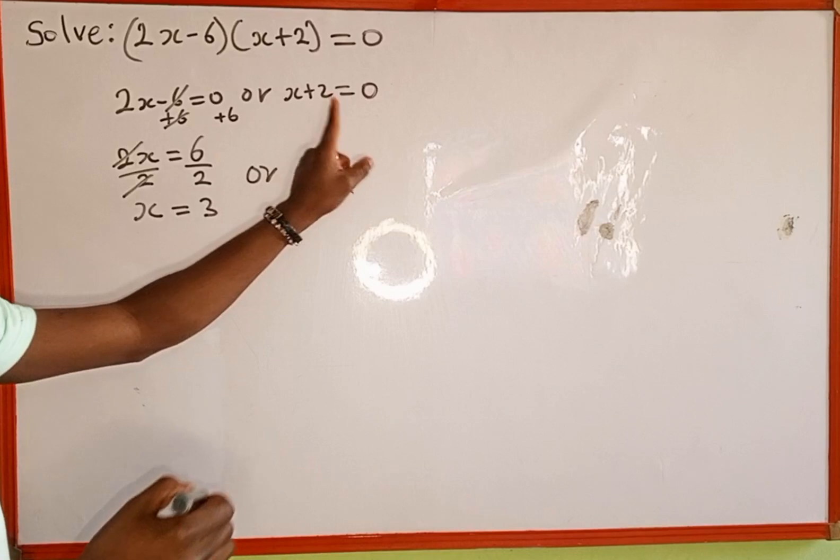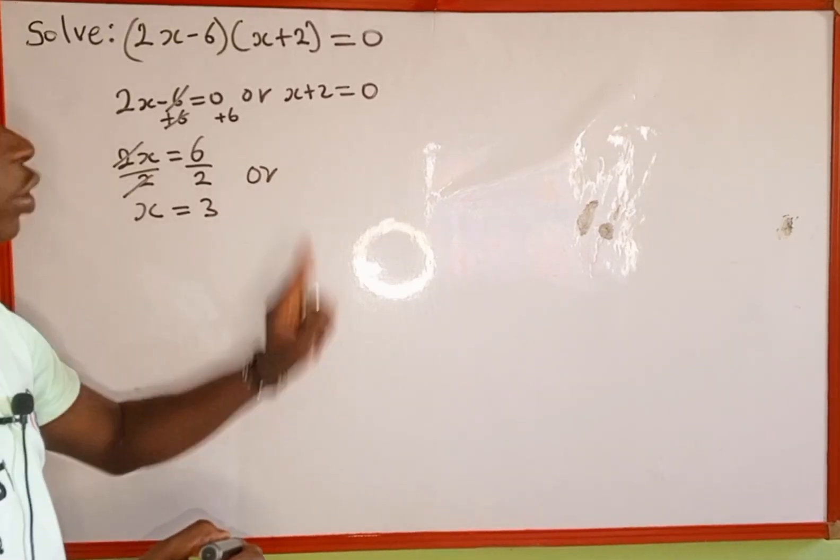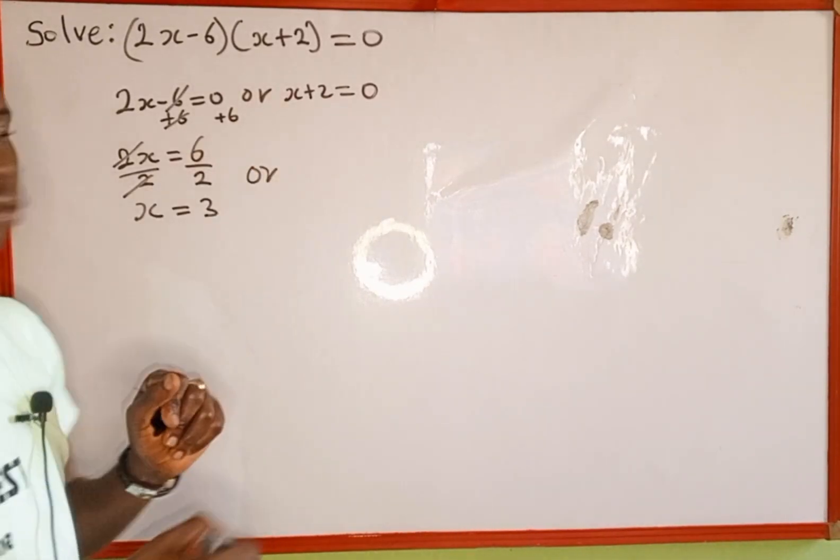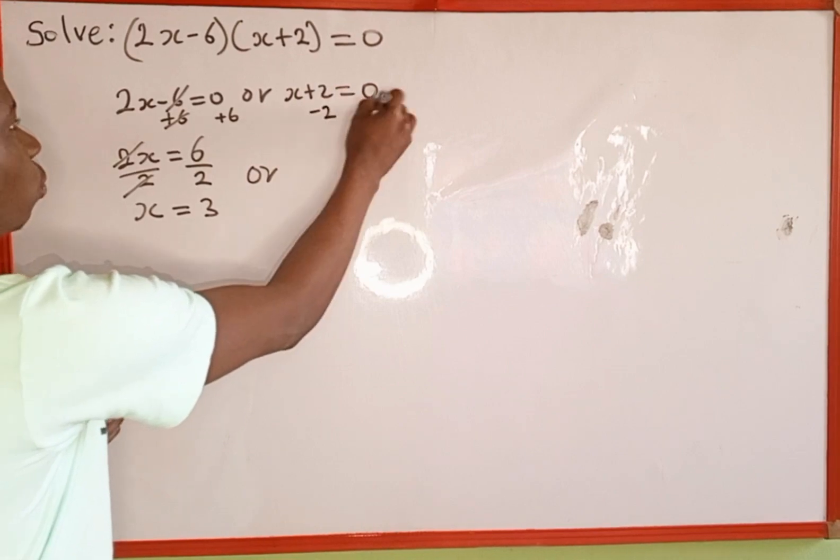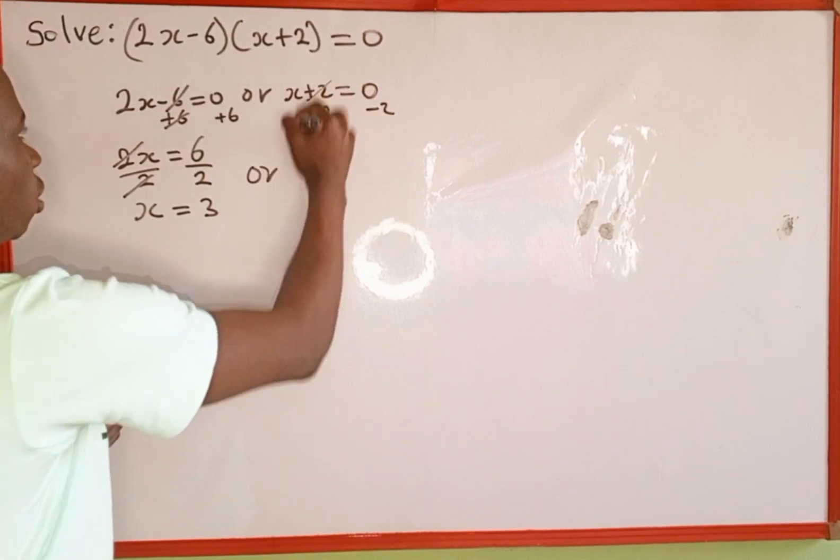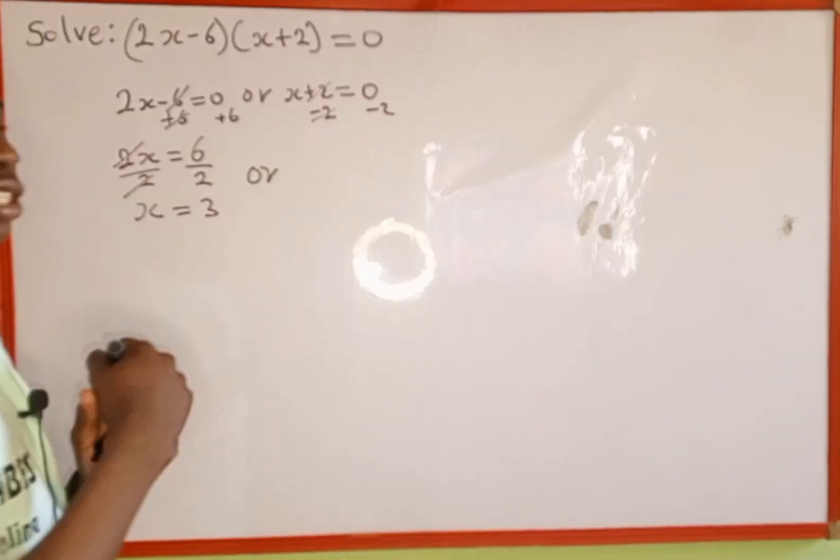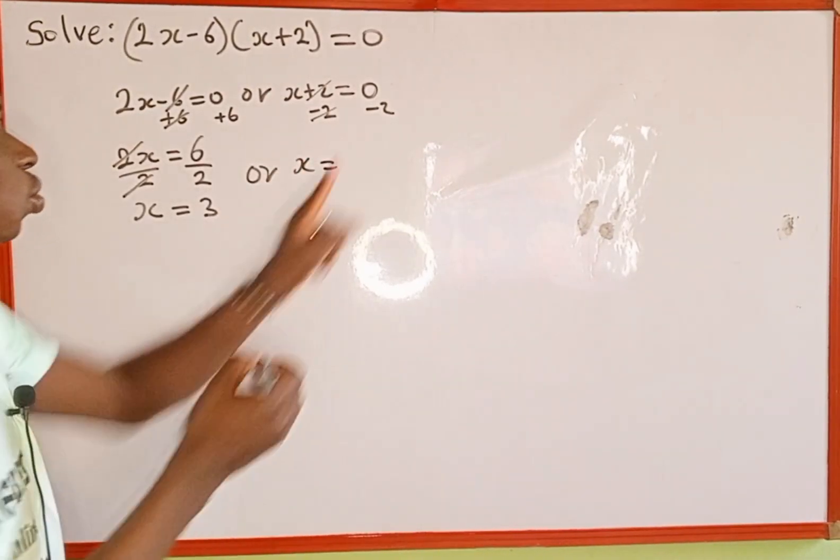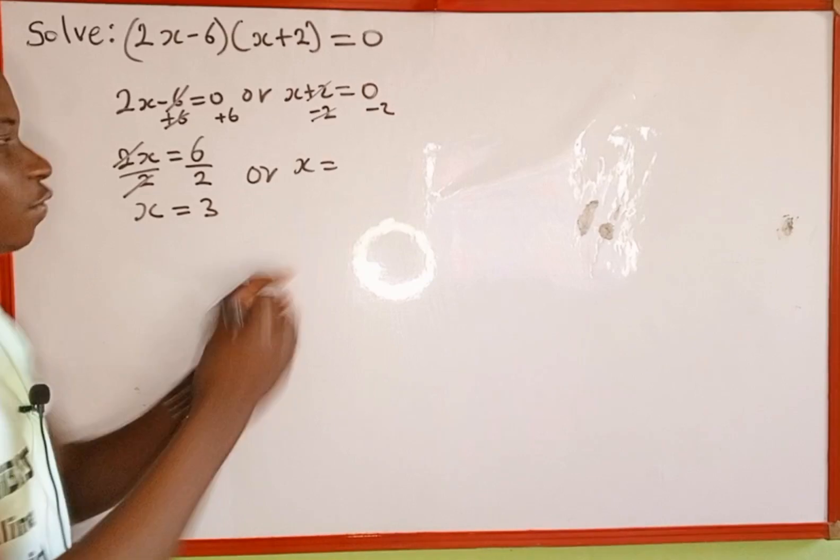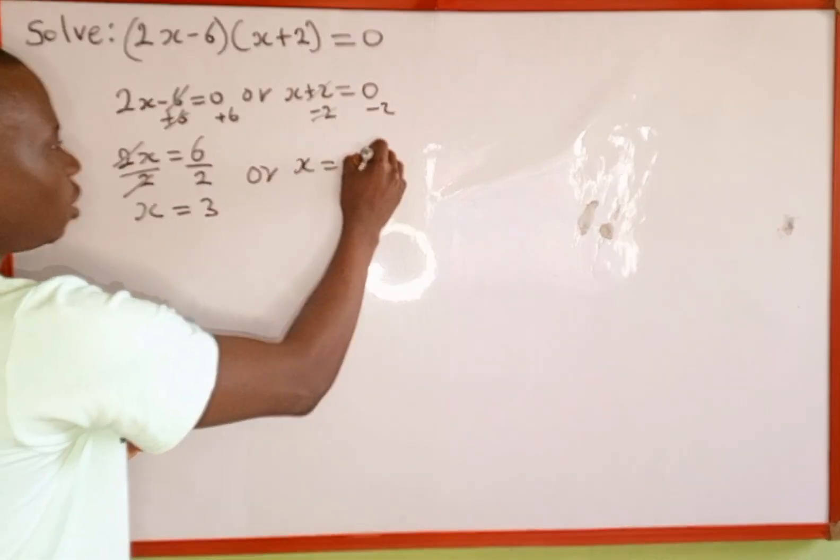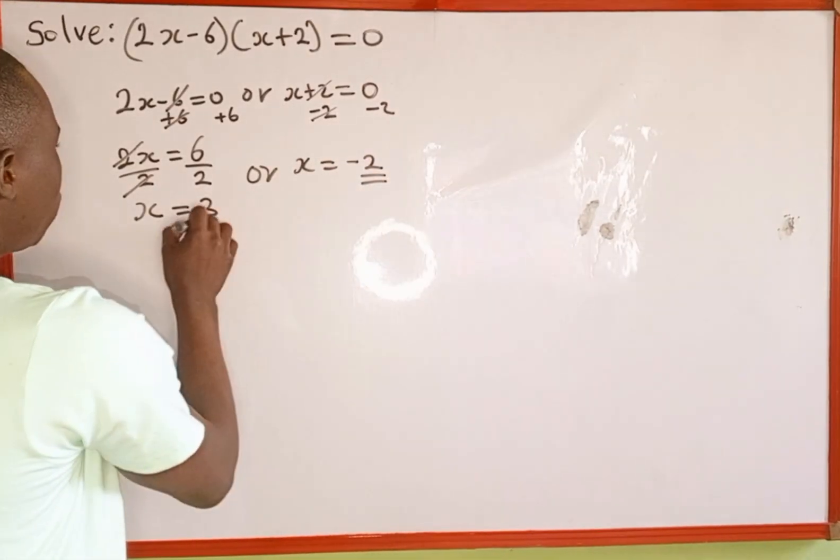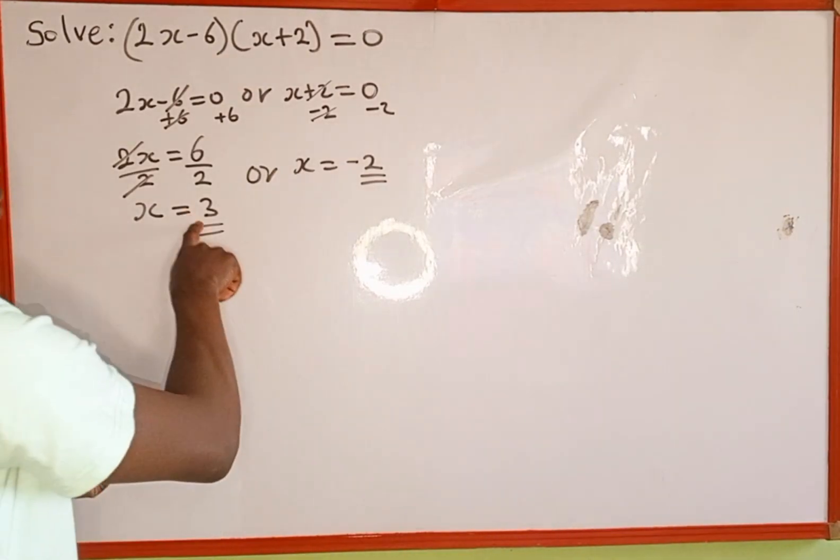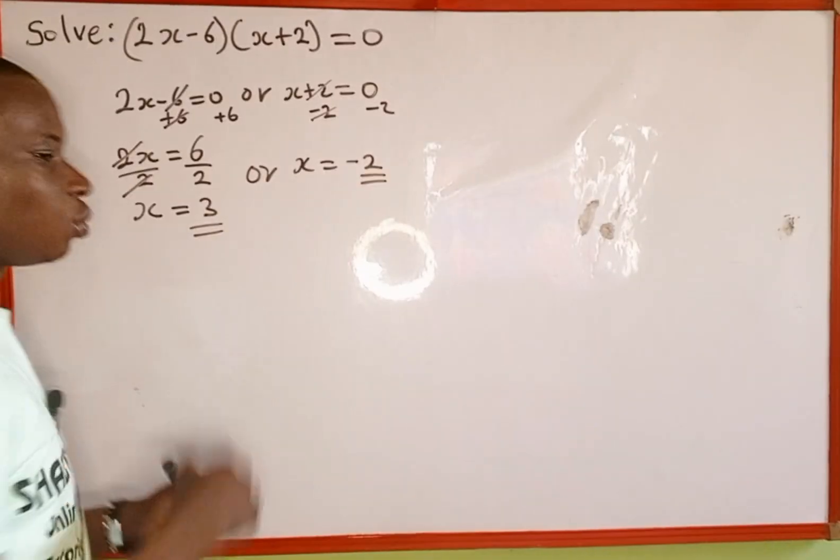Or, now we are going to solve for the value of x here. What do we do? We add negative 2 to both sides. We have negative 2, negative 2. So that this positive 2 is going to cancel out this negative 2. If you add them together, we are left with x, which is equal to 0 plus negative 2, which is negative 2.